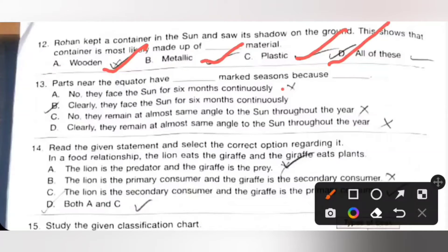Thirteenth: Parts near the equator have no marked season because they remain at almost the same angle to the sun throughout the year. Option C is the correct answer.